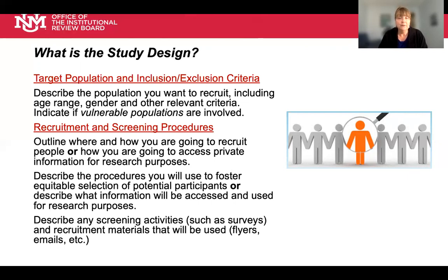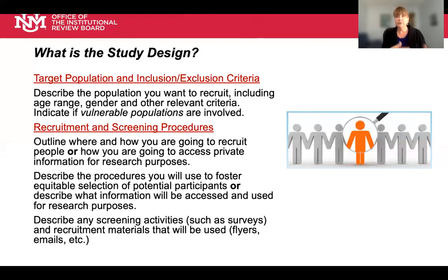In the Recruitment and Screening section, we want you to outline where and how you're going to recruit individuals into your study. If you're only working with existing data, we want you to describe how you're going to access any private information you're going to use for research purposes. Describe the procedures you will use to foster equitable selection of subjects and describe what information will be accessed or used. If you're going to screen potential participants using online surveys or phone calls, please describe that in your protocol and include any actual recruitment materials such as flyers, emails, letters, or social media postings.